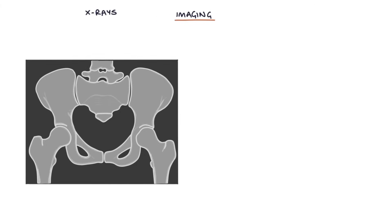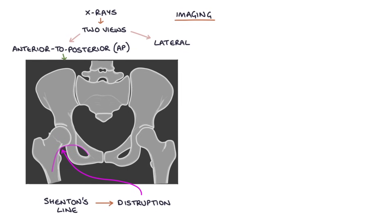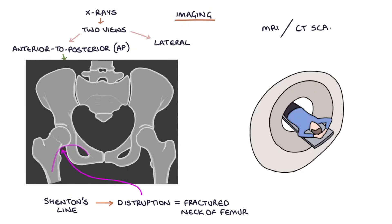X-rays are the initial investigation of choice. Two views are essential as a single view can miss the fracture: anterior to posterior (AP) and lateral views are standard. Shenton's line can be seen on an AP x-ray of the hip — it is one continuous curving line formed by the medial border of the femoral neck continuing to the inferior border of the superior pubic ramus. Disruption of Shenton's line is a key sign of a fractured neck of femur. MRI or CT scans can be used where the x-ray is negative but a fracture is still suspected.